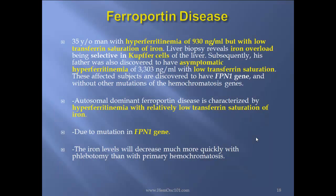Ferroportin disease case report: A 35-year-old man with hyperferritinemia of 900, but with low transferrin saturation — this is the key. If you see both elevated hyperferritinemia and elevated transferrin saturation, that will be primary hemochromatosis. If you see high ferritin with low transferrin saturation, that will be ferroportin disease.